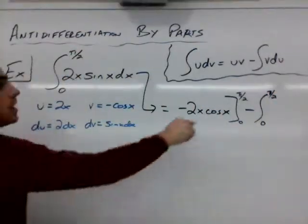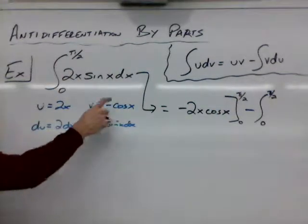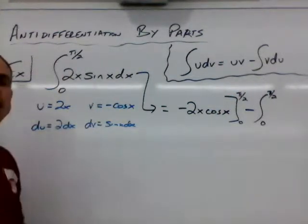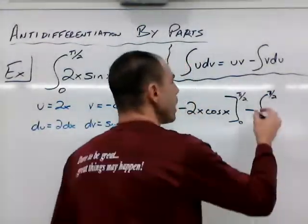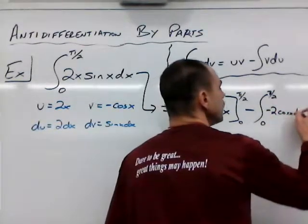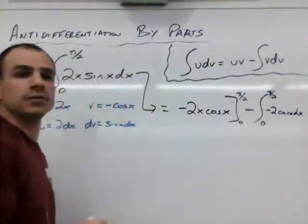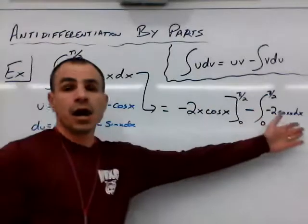And our expression is v times du. Well, v is the opposite of cosine x. Du is 2 dx. So they're being multiplied. I'm just going to rearrange the order slightly with that negative sign. So what we end up having here is negative 2 cosine x dx.